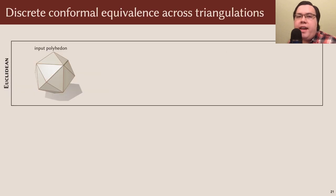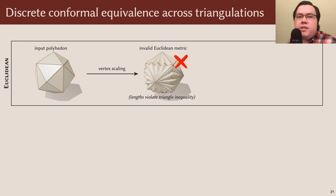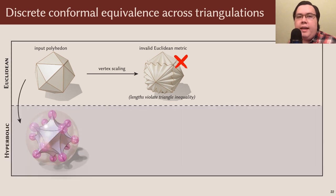This hyperbolic perspective leads naturally to a notion of discrete conformal equivalence beyond the fixed triangulation version that I gave earlier. From a naive Euclidean perspective, there are some scale factors that are disallowed. If you use them to scale your mesh's edge lengths, you violate the triangle inequality and get stuck with invalid geometry. However, we can use the hyperbolic perspective to interpret such scale factors in a valid way.